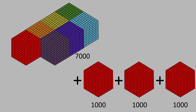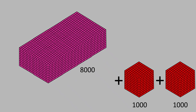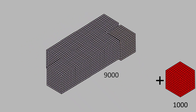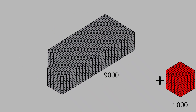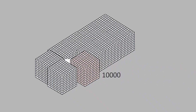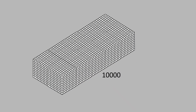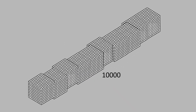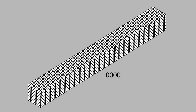7,000 plus 1,000 is equal to 8,000. 8,000 plus 1,000 is equal to 9,000. 9,000 plus 1,000 is equal to 10,000. That is just incredible.